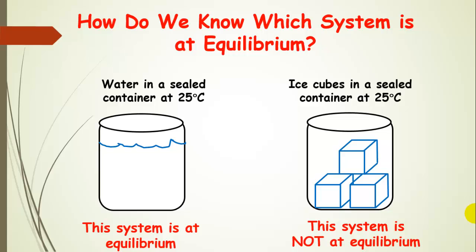Let's think about this. We have water in a sealed container at 25 degrees C. If we were to go away and come back, that container would basically look the same — that system is at equilibrium, so nothing is macroscopically changing. Now think about the ice cubes in a sealed container at 25 degrees C. Something would change there — we would notice a change. And this system is not at equilibrium.